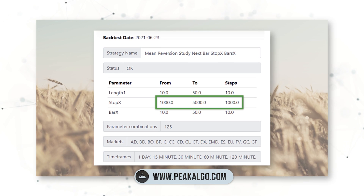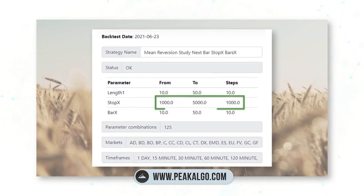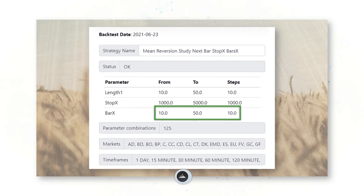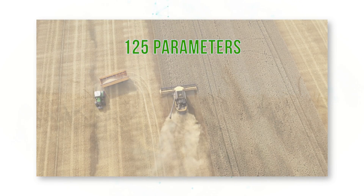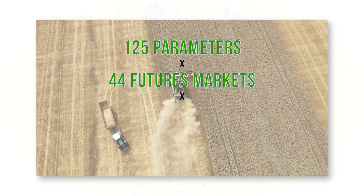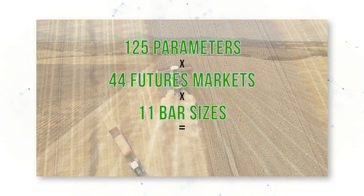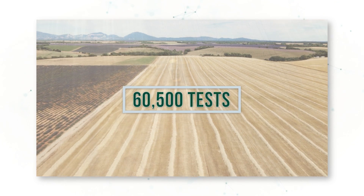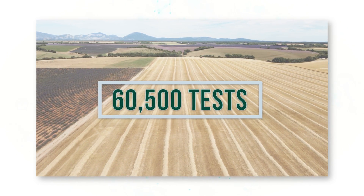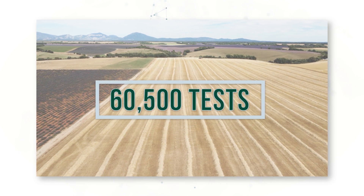We can use a stop loss from $1,000 to $5,000 per contract, and we can test our bar value from 10 to 50 days. That's 125 parameter combinations tested across 44 different futures markets and 11 different bar sizes — a total of 60,500 different tests that we're going to be running on this simple mean reversion strategy.